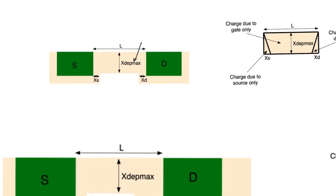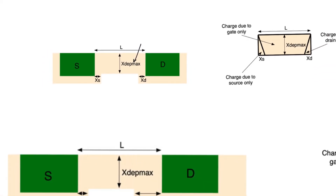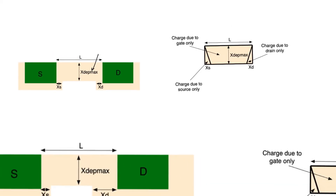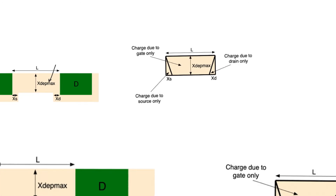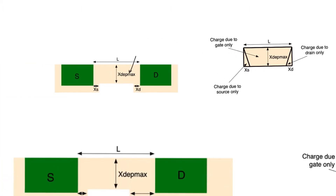If you look at a long-channel transistor, this depletion zone is formed almost entirely by the gate. But if you look at a transistor with a short channel length, then the geometry of the depletion zone is formed both by the gate and by the drain and the source.